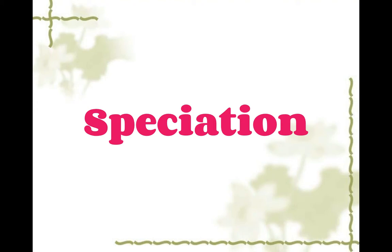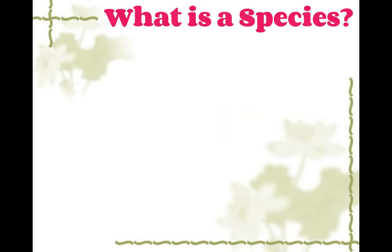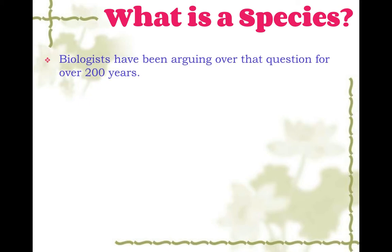For the next lesson in our evolution unit, we're going to be looking at speciation. In order to talk about speciation, which is the formation of a new species, we first have to define what a species is.